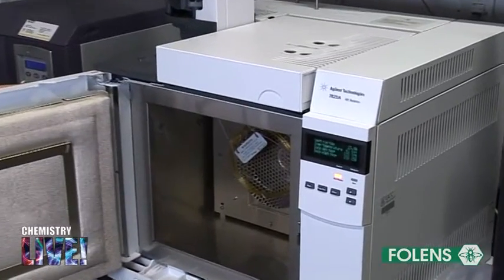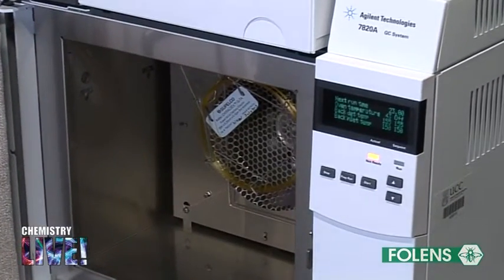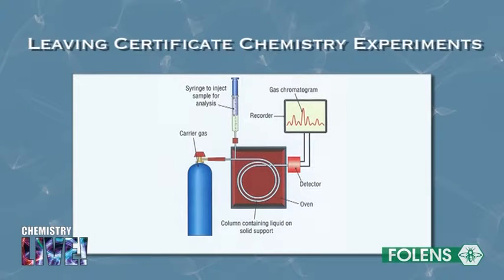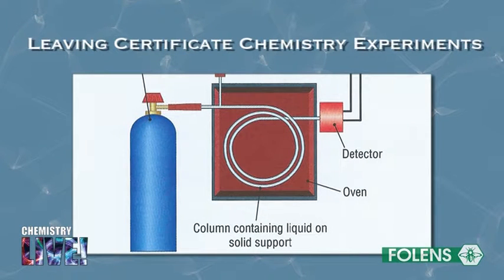The stationary phase is a non-volatile liquid, that is a liquid with a high boiling point such as a long chain alkane. This liquid is spread on solid inert particles such as alumina or silica gel that are packed into a long coiled tube called the column.